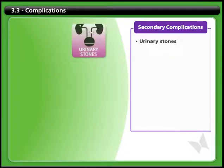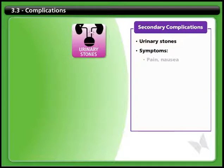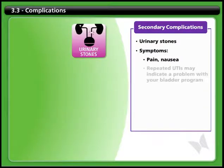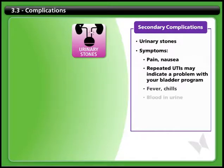Urinary stones are another potential secondary complication. Signs of urinary stones include pain in the abdomen or lower back, nausea, recurring UTIs, fever and chills, and blood in the urine. Your health care provider can help determine whether you have urinary stones and how to treat them.